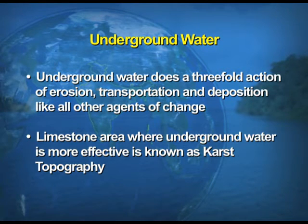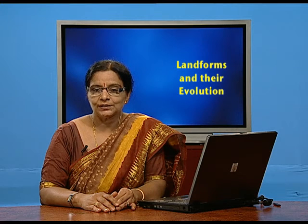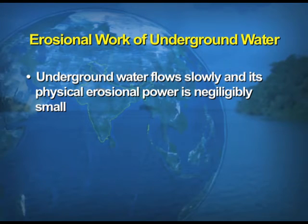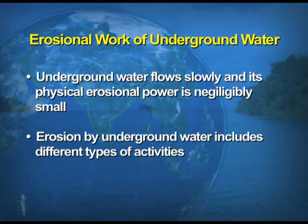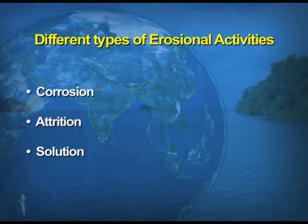The limestone area where underground water is very effective is known as karst topography. The erosional work of underground water: underground water flows slowly and its physical erosional power is negligibly small. Erosion by underground water includes different types of activities — corrosion, attrition, solution, and hydraulic action. Out of all these, solution is the most important process.